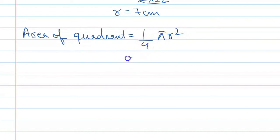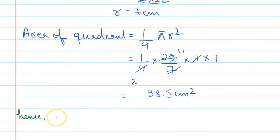Total area of circle divided by 4. So 1 by 4, pi is 22 upon 7 into 7 into 7. Now let's see, calculation is easy. 7 and 7 cancels. This cancels to 2, which is 11. Alright. So this gives us 11 into 7 divided by 2, which equals 38.5 cm squared.